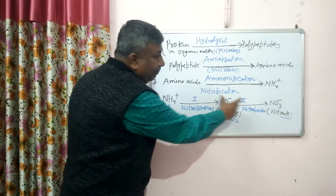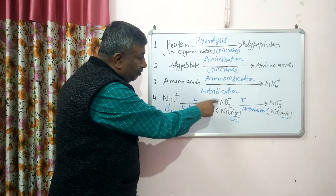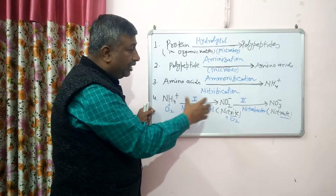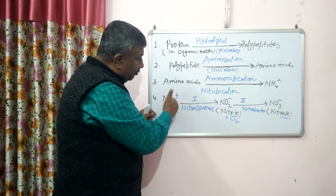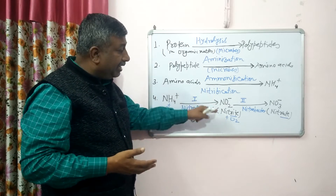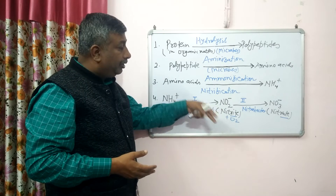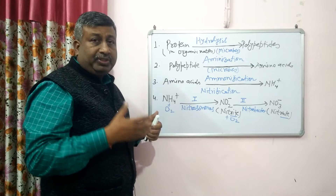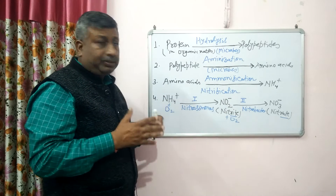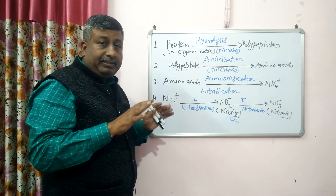The second process (nitrite to nitrate) is faster than the first process (ammonium to nitrite). As a result, nitrites do not accumulate in the soil. If nitrite were to accumulate, it would be toxic to plants. Under aerobic soil conditions, oxygen is available, so this fast conversion occurs. Oxygen is essential for nitrification, and it is available when there is proper aerobic condition.